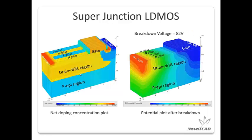Superjunction LDMOS is our next example. From the net doping plot on the left, we can see the alternating P and N pillars, which deplete each other when a high voltage is applied to the drain with other terminals grounded. Superjunction LDMOS has the merit of achieving a lower on-resistance with the same breakdown voltage as a standard LDMOS.